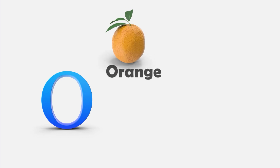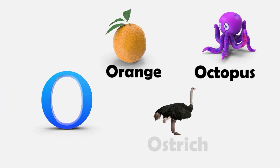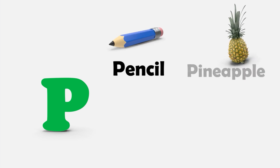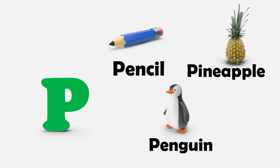O — O is for Orange. O is for Octopus. O is for Ostrich. P — P is for Pencil. P is for Pineapple. And P is for Penguin.